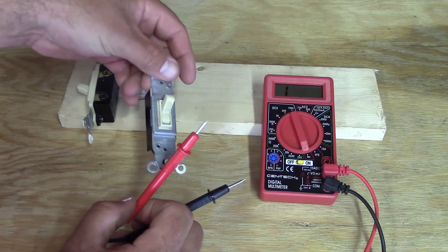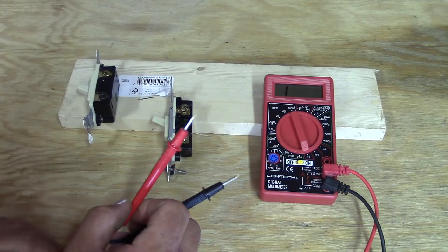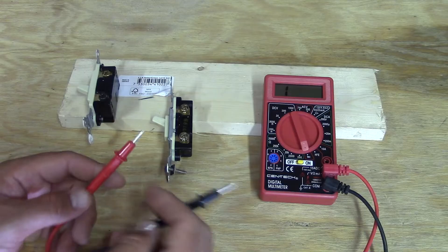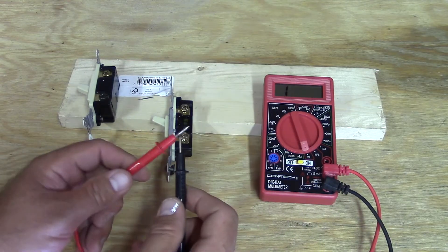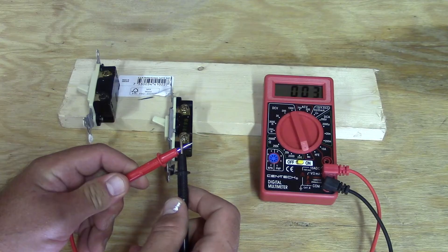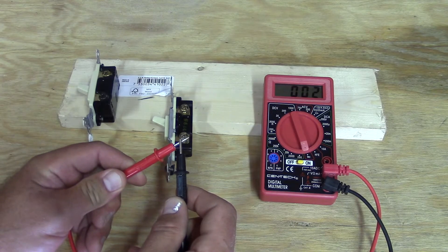So here's a normal single pole switch, just turns it on and off. So as you can see on our meter, right here we're showing an open. When I touch together, it'll zero out. So basically it's coming down to show continuity's there.